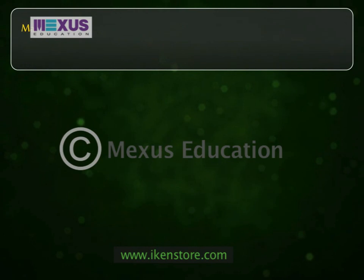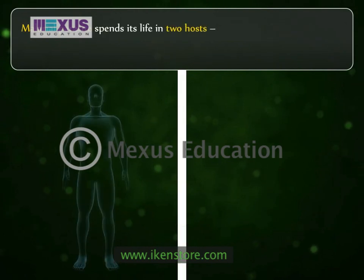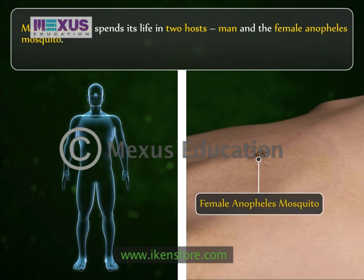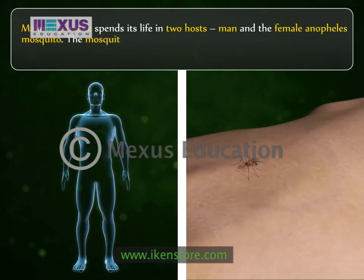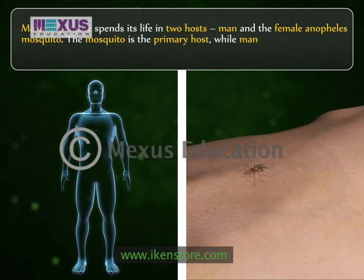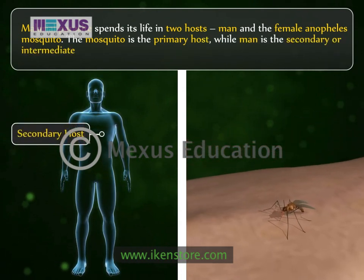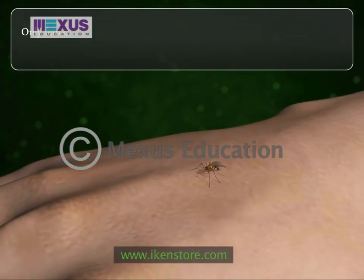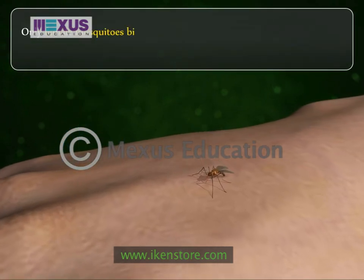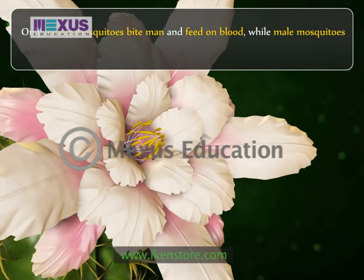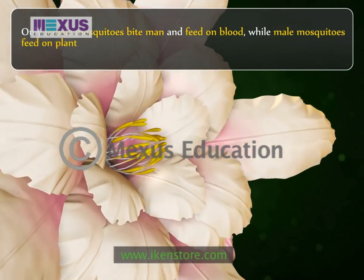The malarial parasite spends its life in two hosts: man and the female Anopheles mosquito. The mosquito is the primary host, while man is the secondary or intermediate host. Only female mosquitoes bite man and feed on blood, while male mosquitoes feed on plant juices.